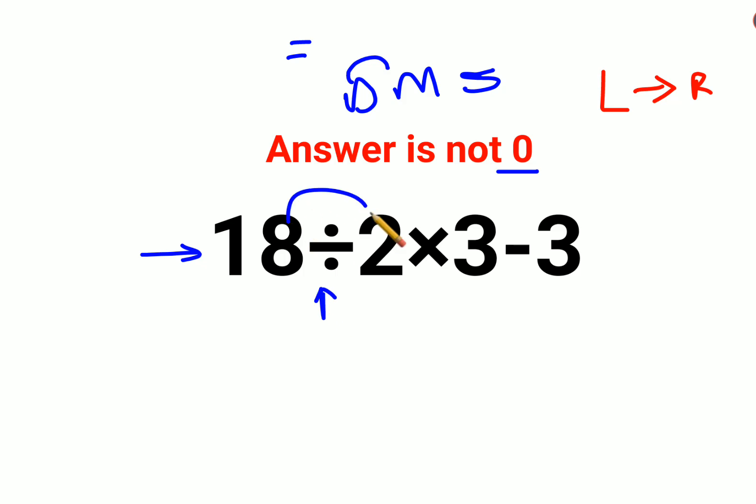So first, what we'll do is 18 divided by 2 that gets you 9 times 3 minus 3. So we have 9 times 3 which is what? 27 minus 3 gets you what? 24.